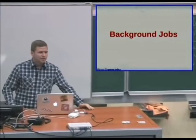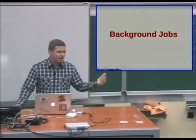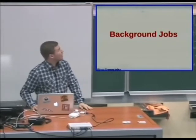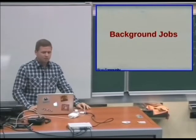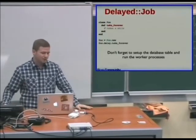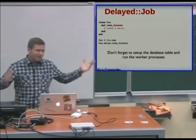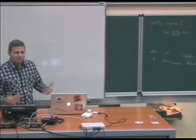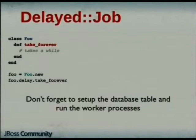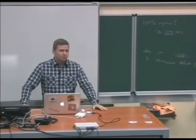Background jobs is the most common thing people like to have out of TorqueBox. If you're using DelayedJob, you have a class with a method that takes forever. With DelayedJob, you instantiate the class and call `foo.delay.take_forever`. The code is simple, but you still have to run those workers — you've got to set up a database table, either Mongo or relational, and run workers to actually execute these jobs.